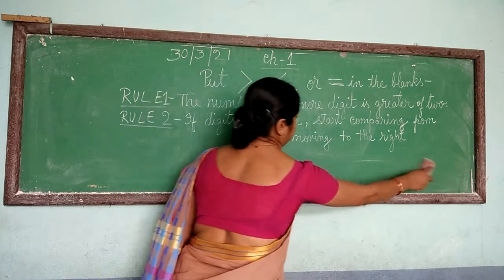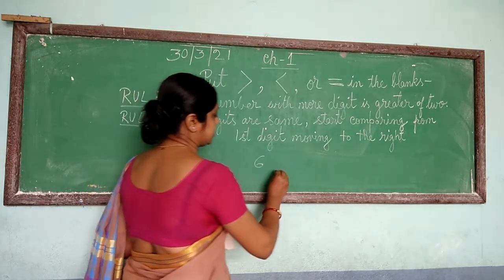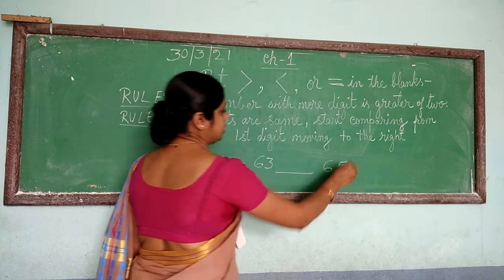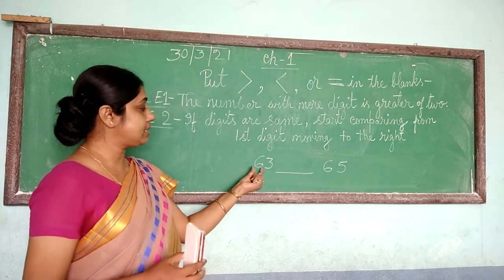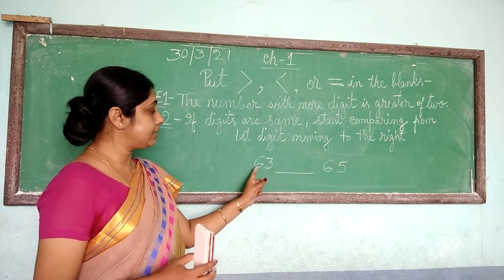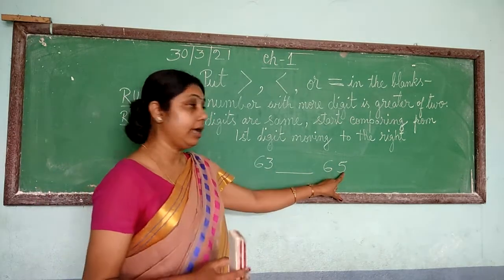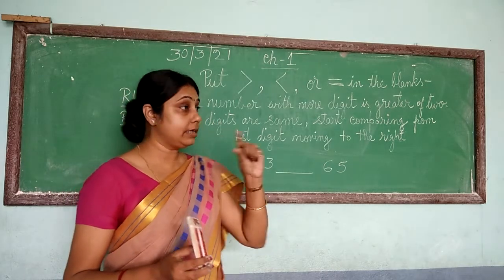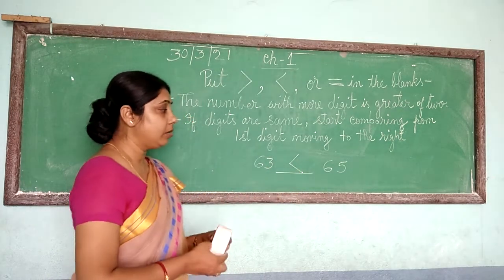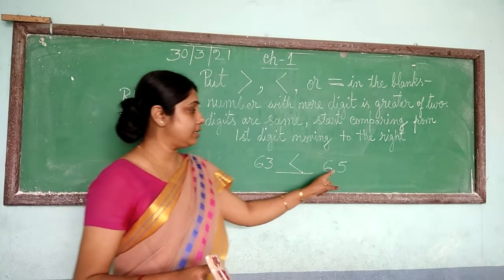Rule 2: if the number of digits is the same, we compare digit by digit. Suppose both sides have 6 as the first digit. The second digit here is 3 and the other side is 5. Since the first digit is the same, we shift to the second number on the right. Next to 6 is 3 here, and next to 6 is 5 on that side. So that side is greater, and we keep the open sign facing the bigger side. So 63 is less than 65.